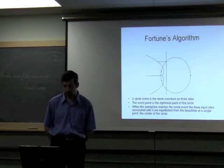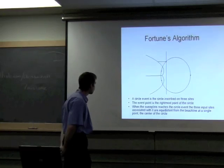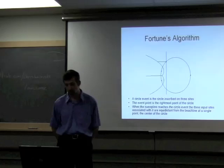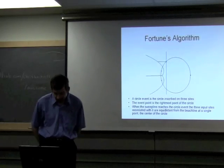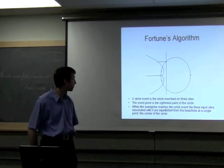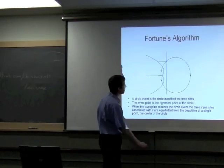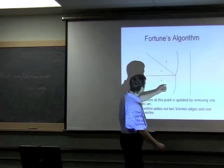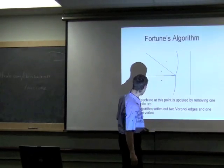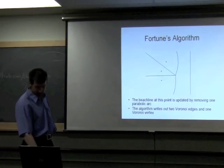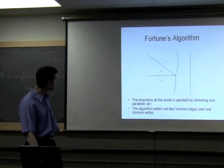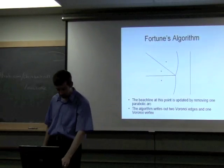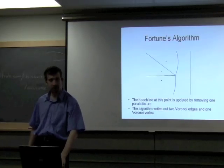Once there's no more sites, the algorithm is complete, and any incomplete Voronoi edge goes out to infinity. The typical thing is to clip it so you don't have infinities running around. Going into more detail on circle events, which are where Voronoi vertices are formed: these are circles where there's three or more input sites equidistant from the center. You inscribe a circle on three sites. The event point is the rightmost part of the circle. That's where a lot of the work happens.